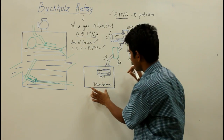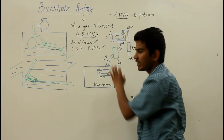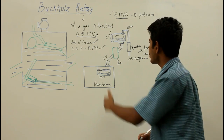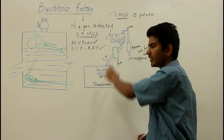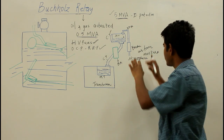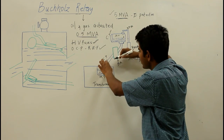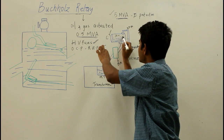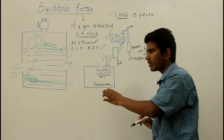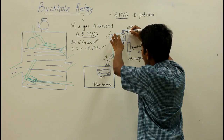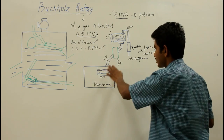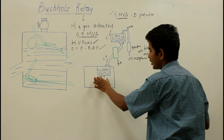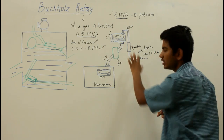This is the overall connection layout of the transformer: showing where the Buchholz relay, conservator tank, and breather are located. If asked about the conservator tank's purpose: whenever the transformer is overloaded, it provides adequate space to the expanded oil. The breather filters the air from moisture. Whenever the oil temperature increases, the oil expands, and when operation returns to normal, the oil level falls and air accumulates in that space.